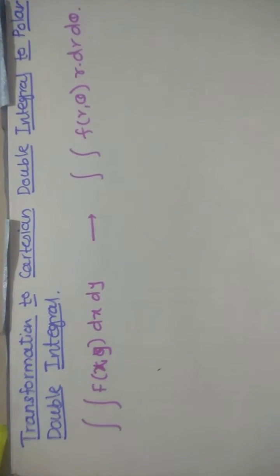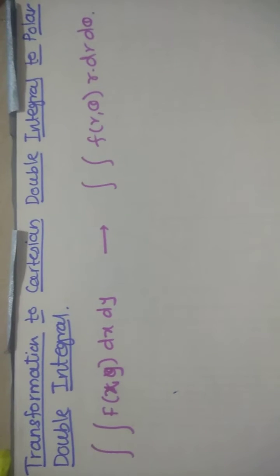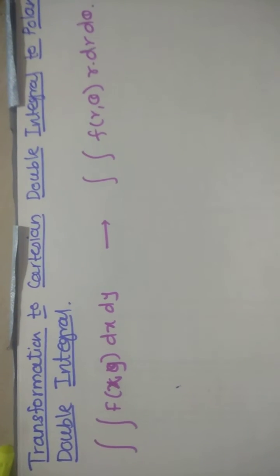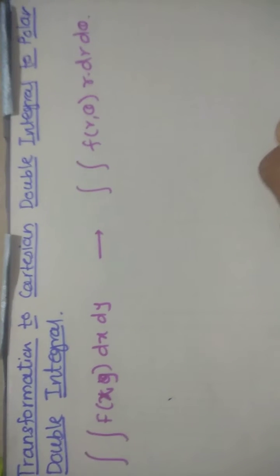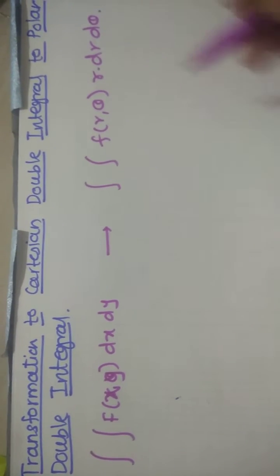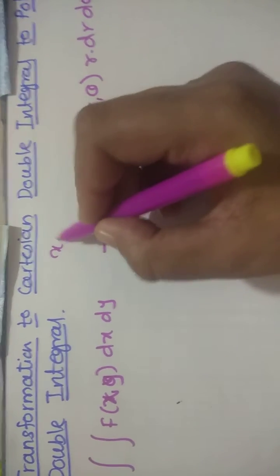Hello friends, today we are going to discuss transformation of Cartesian double integral to polar double integral. Sometimes it is difficult to solve the integration using Cartesian coordinate system. Suppose you have an example like x squared y squared upon x squared plus y squared.